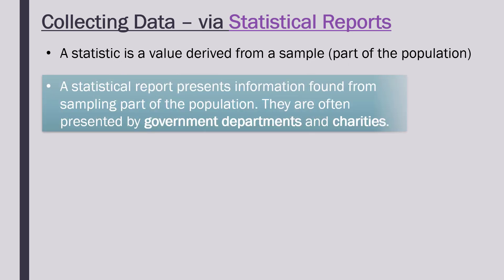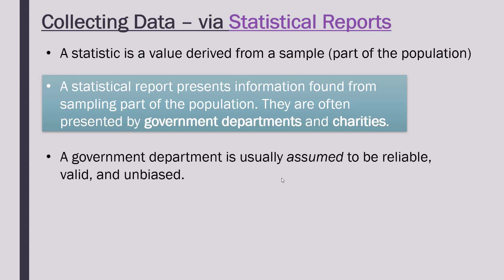So a statistical report is presenting information found from sampling part of a population — it's got some information from a sample. Often these reports are presented by government departments, and also charities quite often as well. Charities are not part of a government, but usually you think of them as being quite neutral. Similarly, we usually assume a department of a government to be quite reliable.